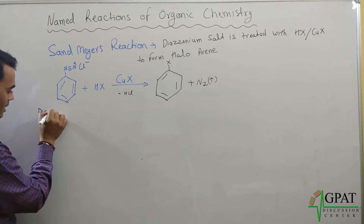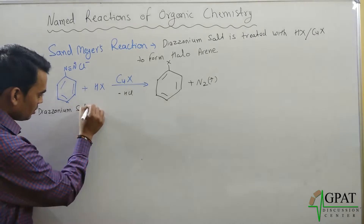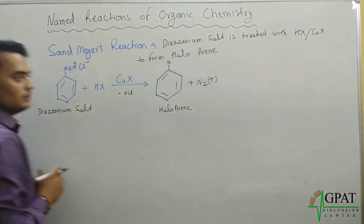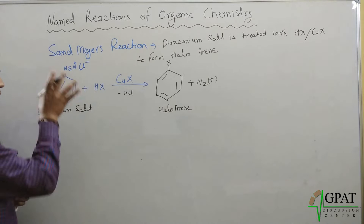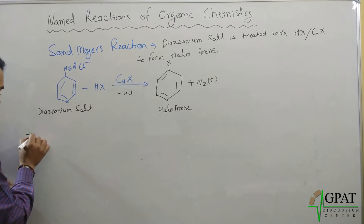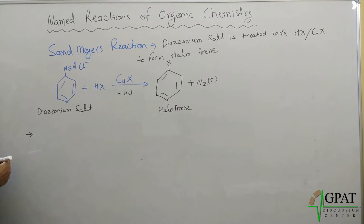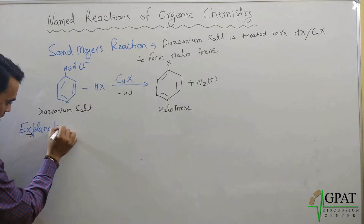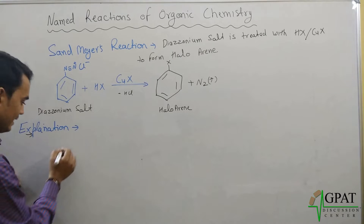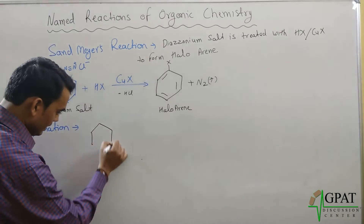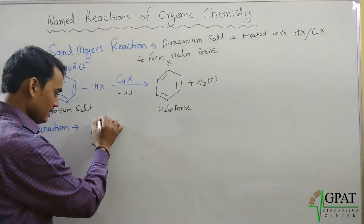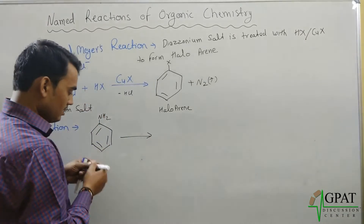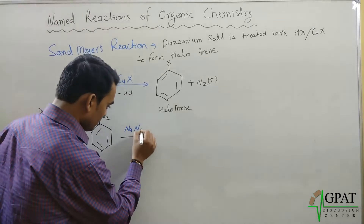So this is the diazonium salt and this is the haloarene. The next question is: how will the diazonium salt be prepared? I will give you a simple explanation. When aniline — which is a benzene ring with an amino group — is reacted with NaNO₂ and HCl...